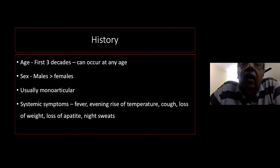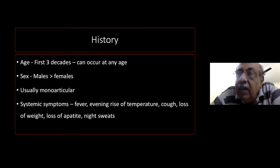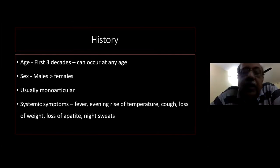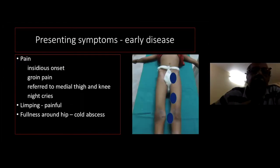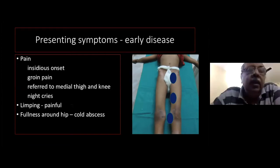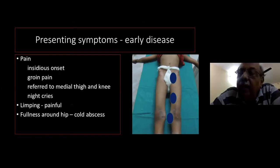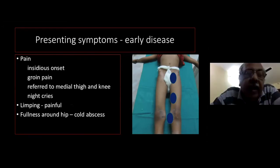When the patient comes to you in the examination, the first thing is the history. Most cases are seen in the first three decades, though it can occur at any age. Males are more commonly affected than females, and tuberculosis is almost always monoarticular. Systemic symptoms like fever, evening rise of temperature, cough, loss of weight, loss of appetite, and night sweats are commonly associated. The presenting symptom is often pain in the groin, referred to the medial aspect of the thigh and the knee, with an insidious onset. In later stages, night cries may be present.